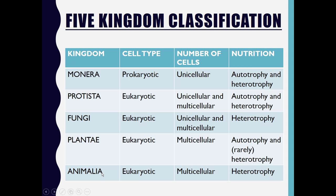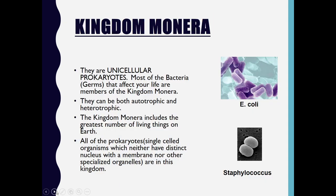The last kingdom, Animalia: all organisms are eukaryotic, they are multicellular, and their mode of nutrition — they are heterotrophic.